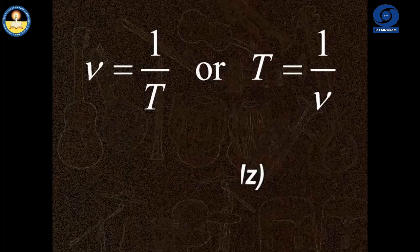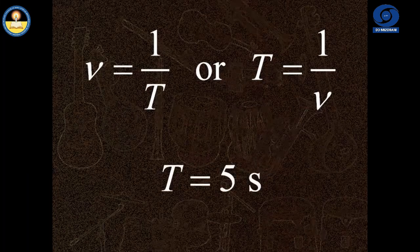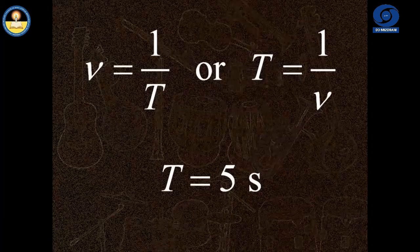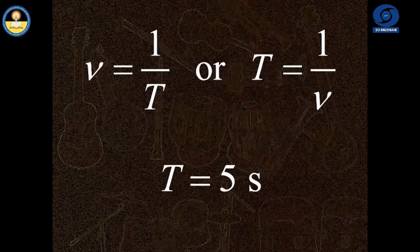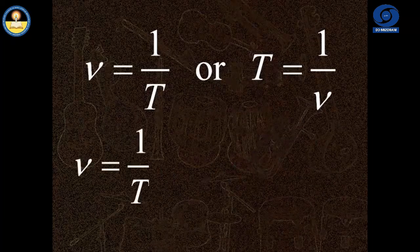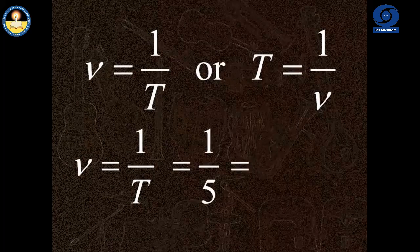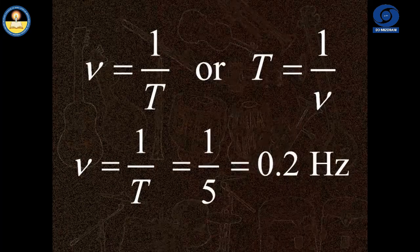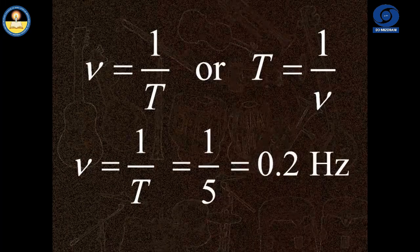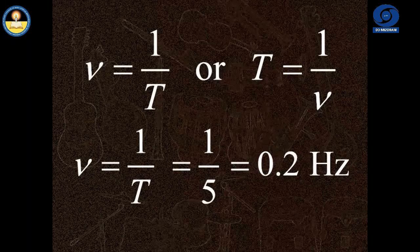If the time period of a wave is 5 seconds, it means it takes 5 seconds for the wave to complete one cycle, then the frequency is 0.2 hertz. That is, the wave completes 0.2 cycles every second.